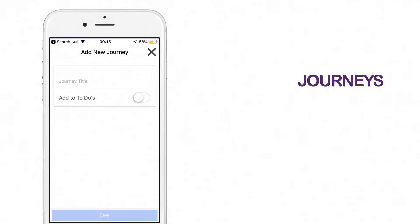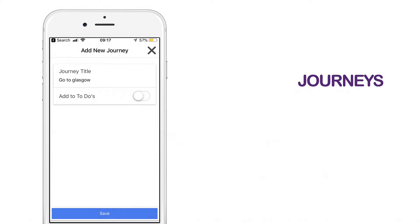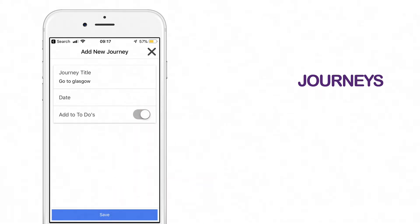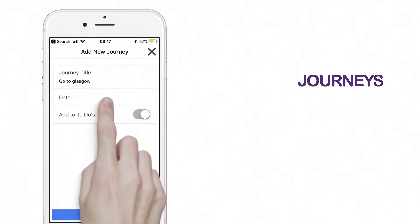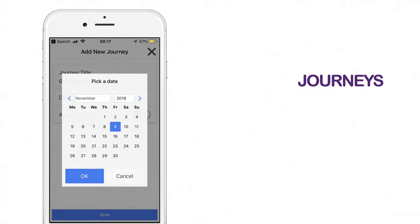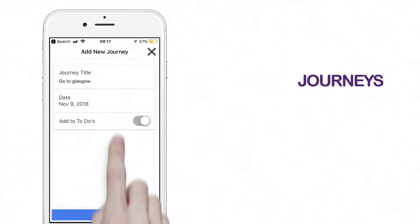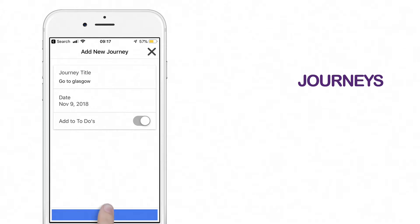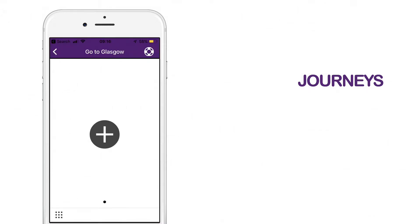Add a journey title. You have the option to add your journey to your to-do list. Choose a date you want to complete the journey. Save the journey by clicking on the button at the bottom of the screen.